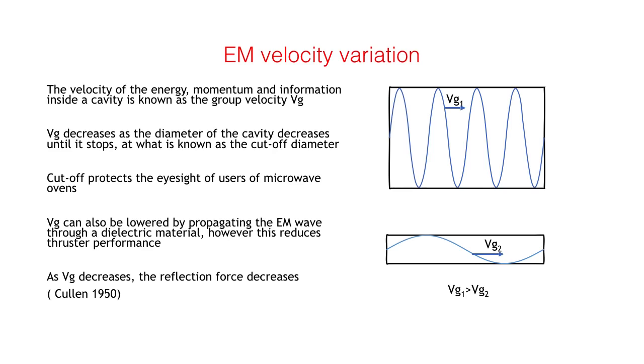However, this does reduce thrust performance. In 1950, Cullen proved by experiment that the radiation pressure decreases as vg decreases.